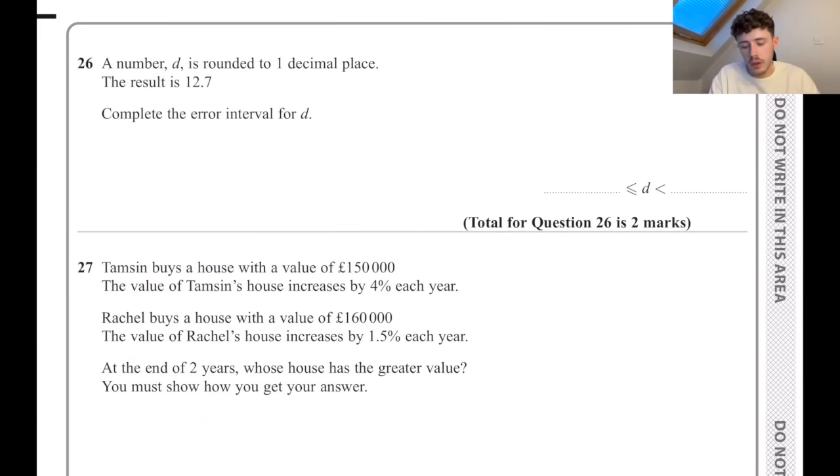A number D is rounded to one decimal place. The result is 12.7. Complete the error interval for D. The lowest that number could be is 12.65 because that will round up to 12.7. And notice here it's just a less than, so the highest that could be is 12.75.